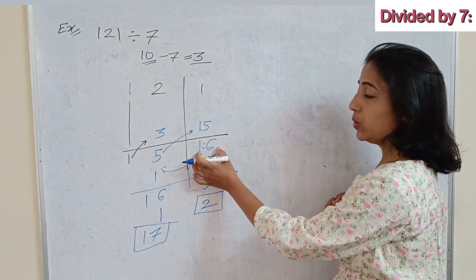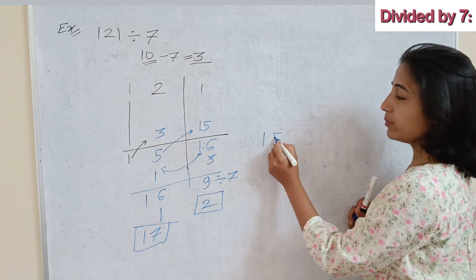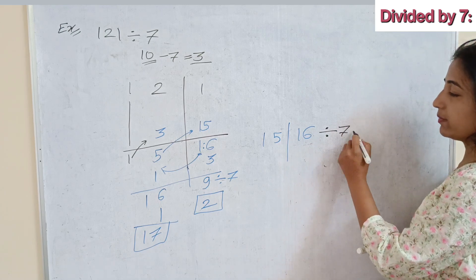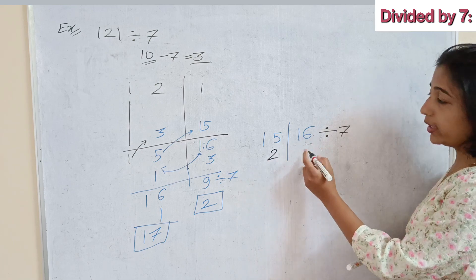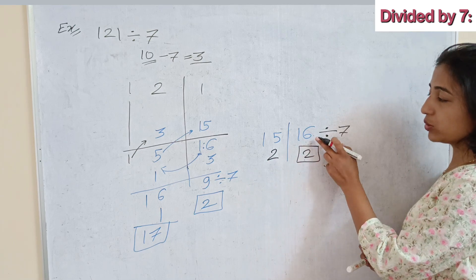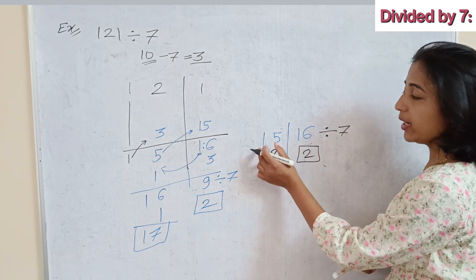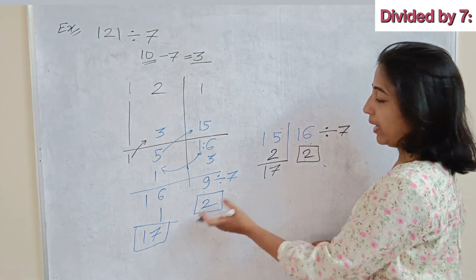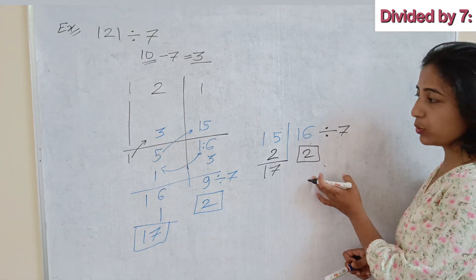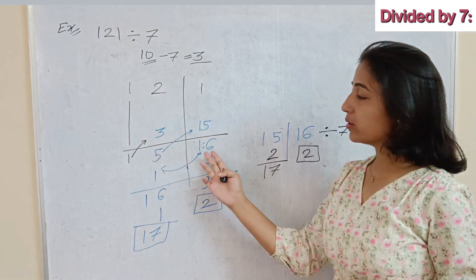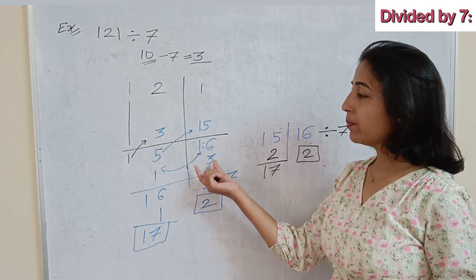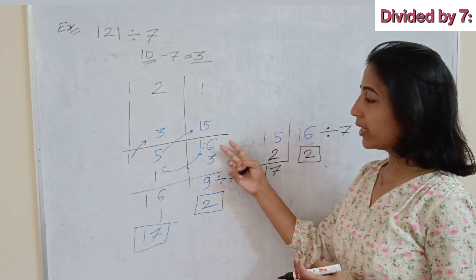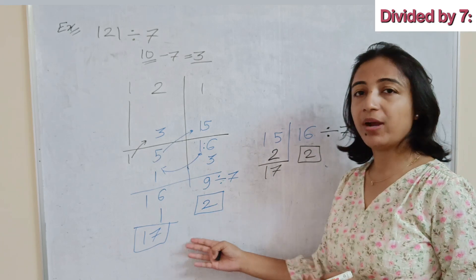This process can also be applied differently. Instead of breaking 16, you can take the left part as 15 and the right side as 16, then directly divide 16 by 7. 7 twos are 14, so 16 minus 14 gives remainder 2, and the quotient 2 is added to 15, giving 17. So either method works. For very large numbers, applying this process reduces the number step by step until you have a small digit easily divisible by 7.